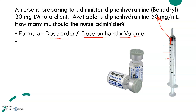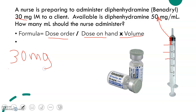One ml contains 50 milligrams. However, the order calls for 30 milligrams. So you have to find how many ml you would pull up to give 30 milligrams. I know it's going to be less than one, because one ml is actually 50 milligrams. So if that is 30 milligrams, that means it is less than one. So the dose order is 30 milligrams.